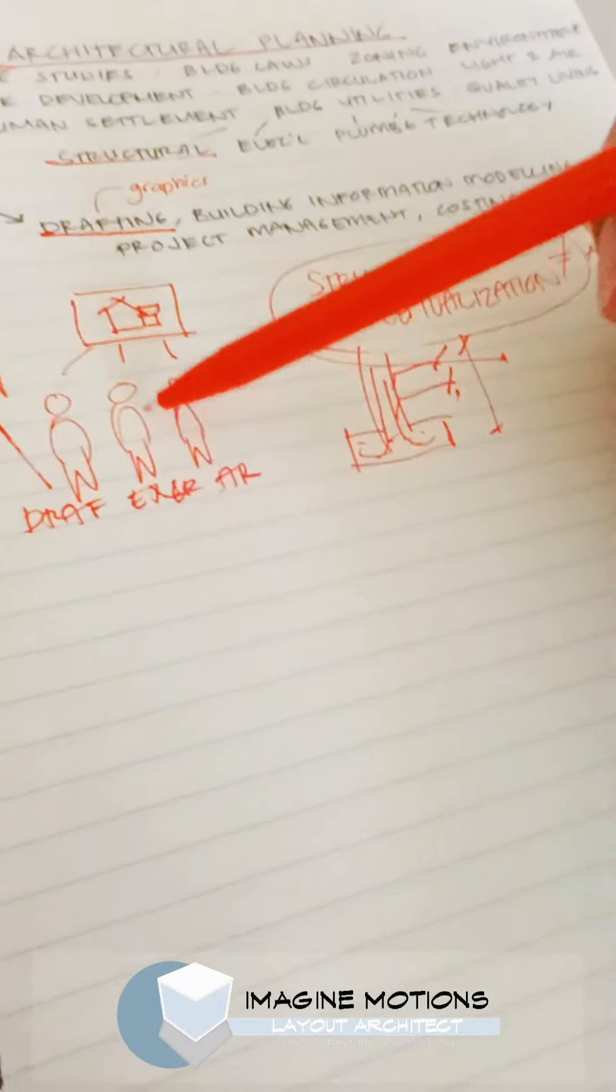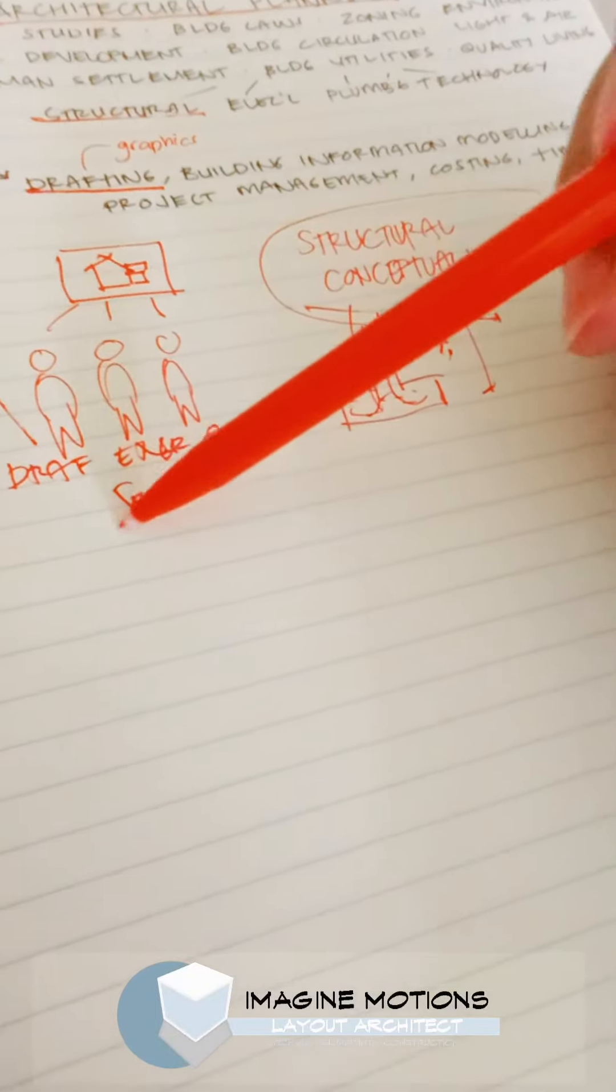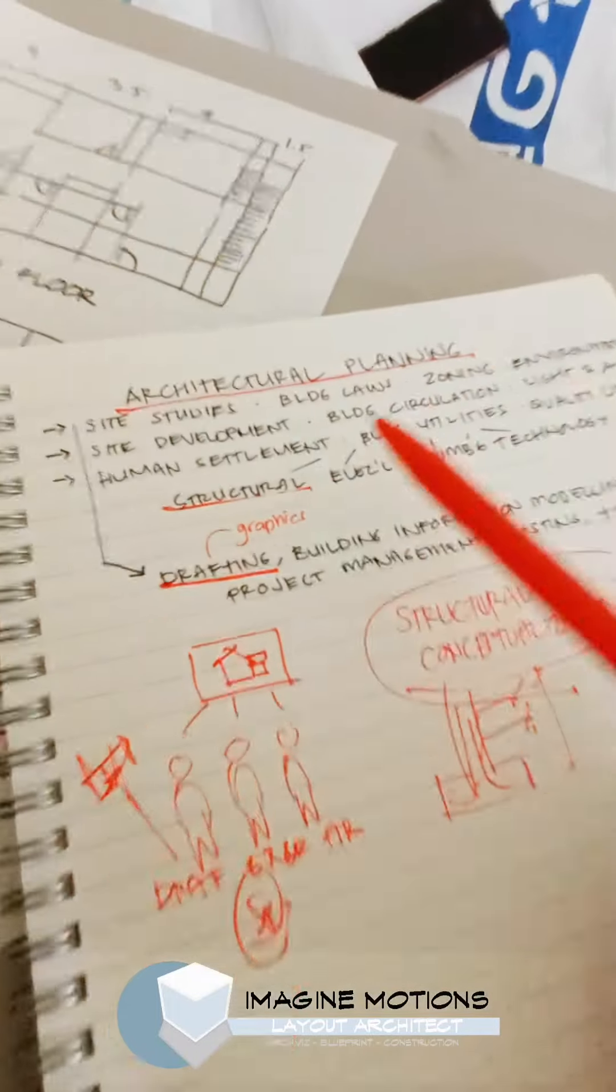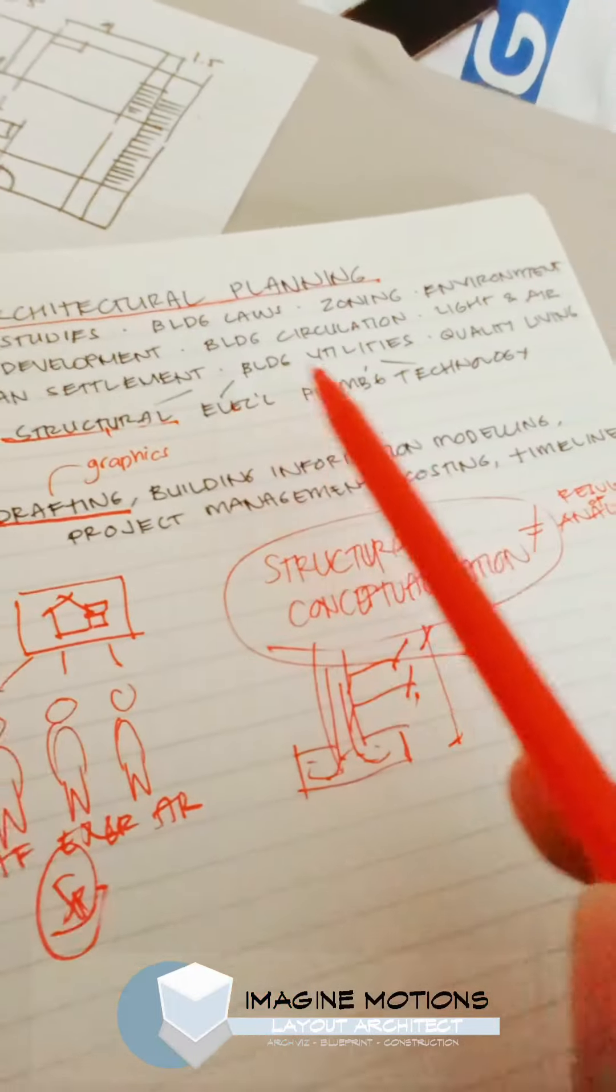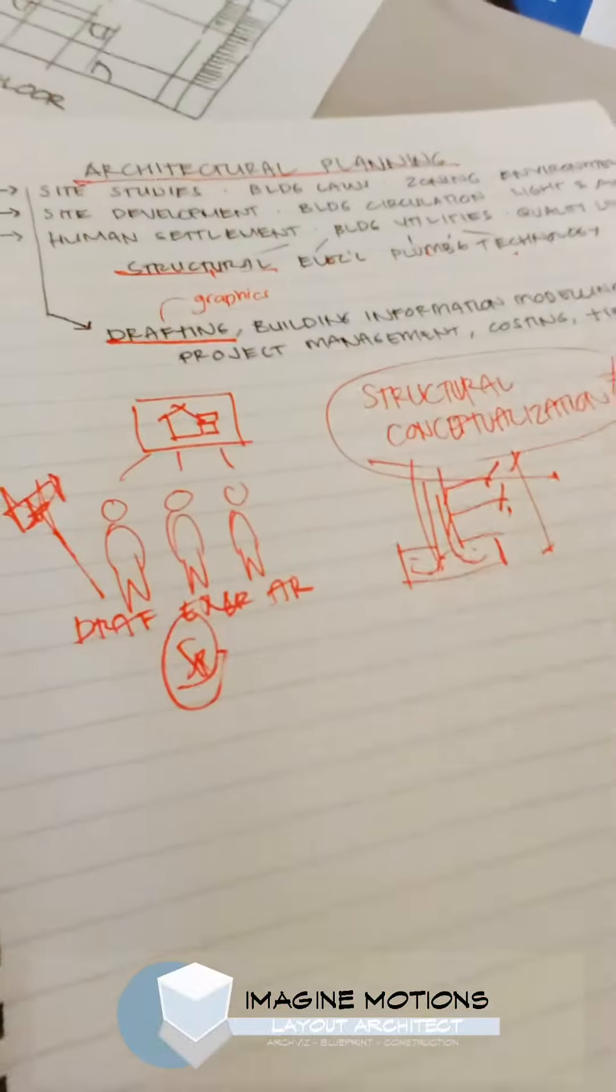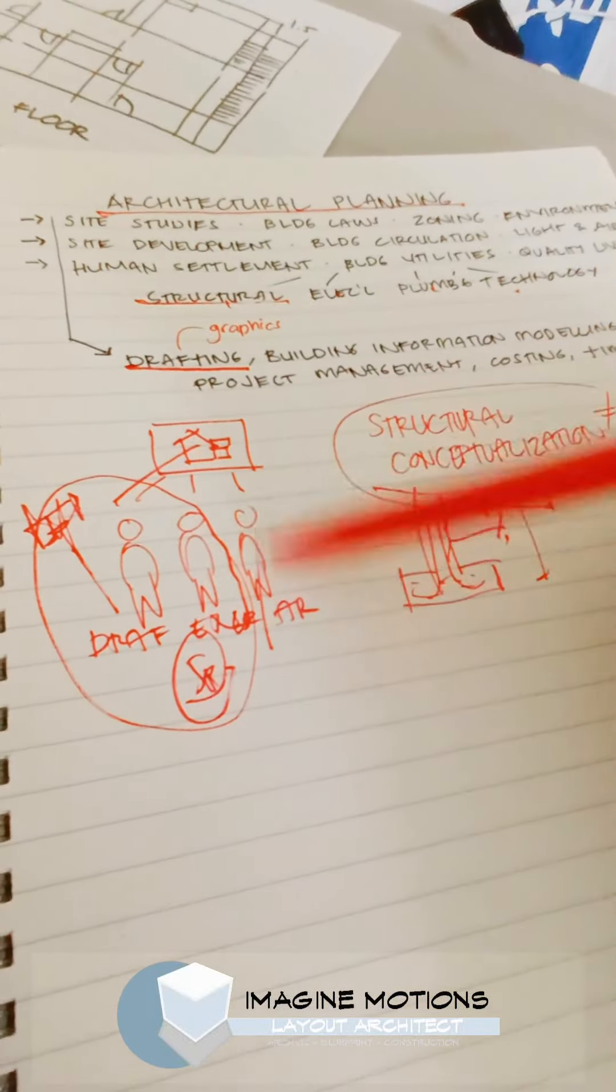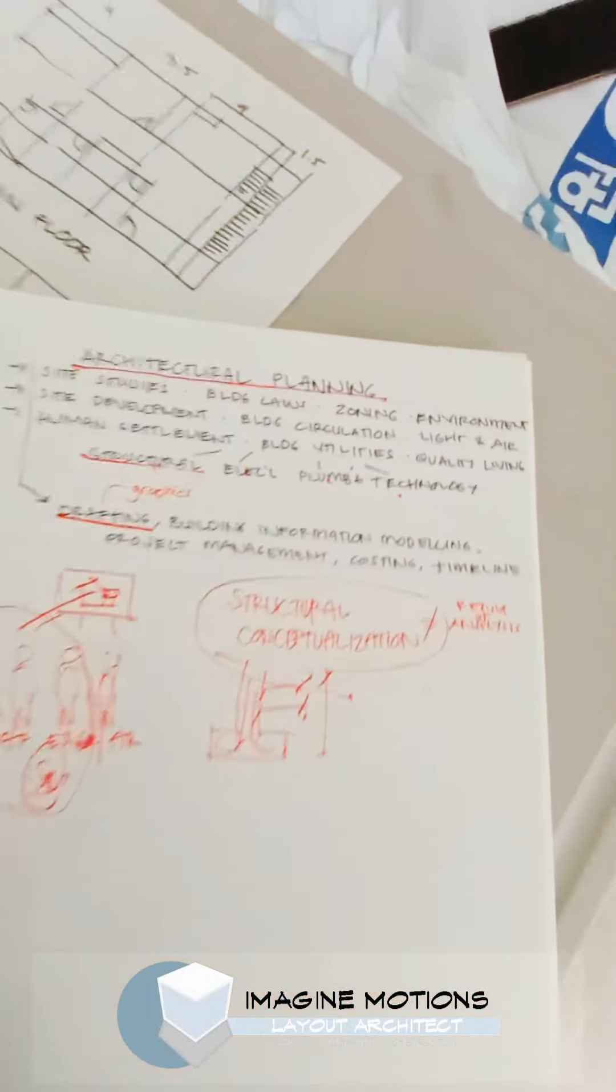Therefore, the draftsman does the drawings, the engineer does his specialization, and mind you, it's not only the civil who is there. And the architect considers all of these into the architectural design. Let's take a quick walkthrough of architectural planning.